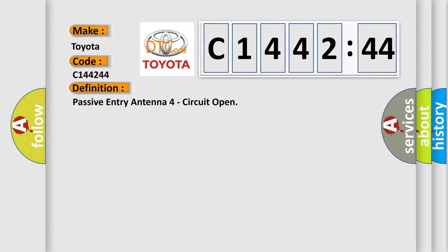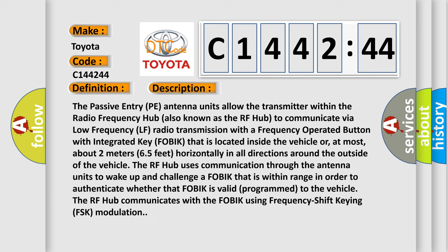The basic definition is Passive Entry Antenna 4 Signal Circuit Open. And now this is a short description of this DTC code. The Passive Entry PE antenna units allow the transmitter within the Radio Frequency Hub, also known as the RF Hub, to communicate via Low Frequency LF radio transmission with a Frequency Operated Button with Integrated Key FOBIK that is located inside the vehicle or, at most, about 2 meters (6.5 feet) horizontally in all directions around the outside of the vehicle.